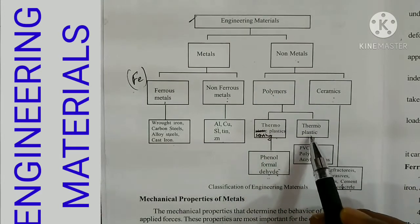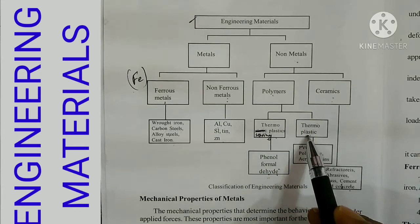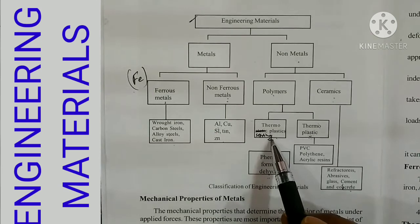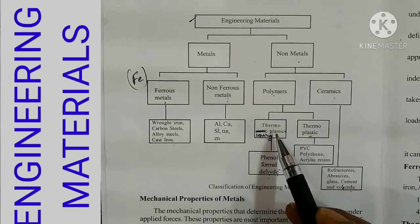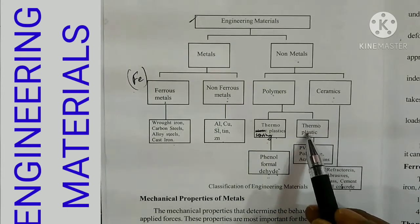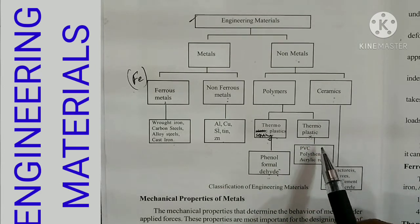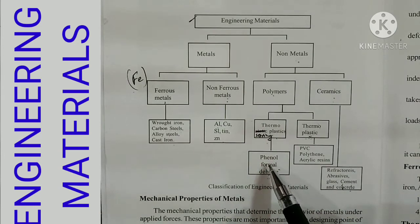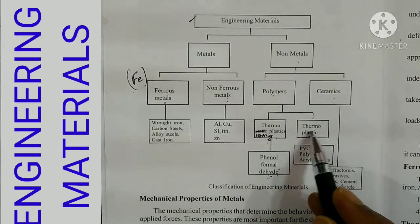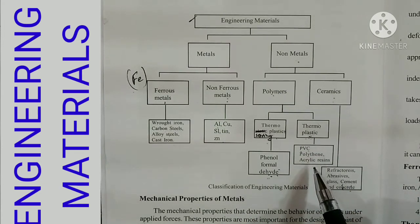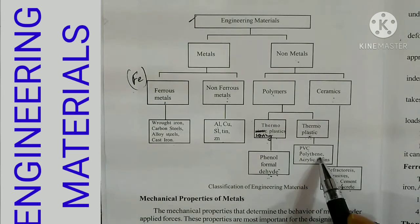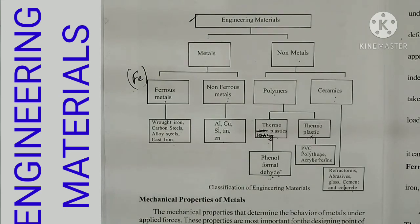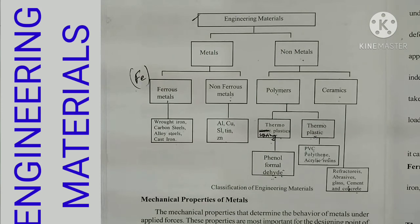Polymers can be divided into two categories: thermoplastics and thermosetting plastics. Thermoplastics can be recycled — for example, polythene bags can be melted and remade. Examples of thermosetting plastics include phenyl formaldehyde. Examples of thermoplastics include PVC, polyvinyl chloride, polythene bags, and acrylic resins. These are the classifications of engineering materials. This is a six-month syllabus question. Thank you.